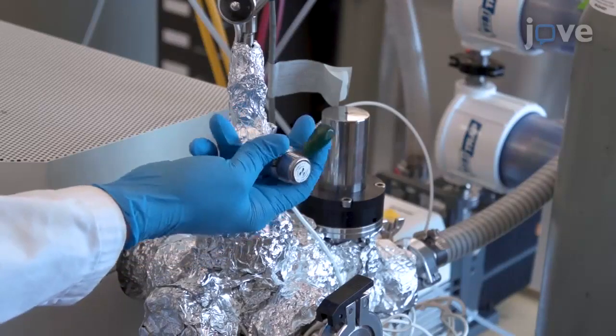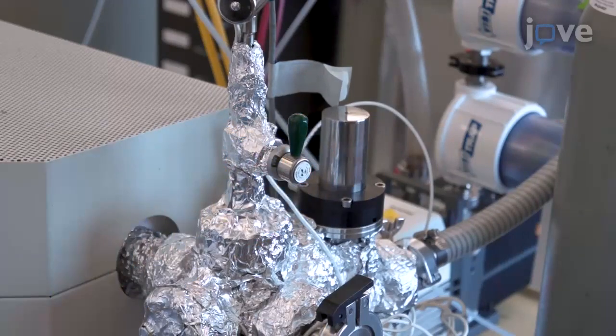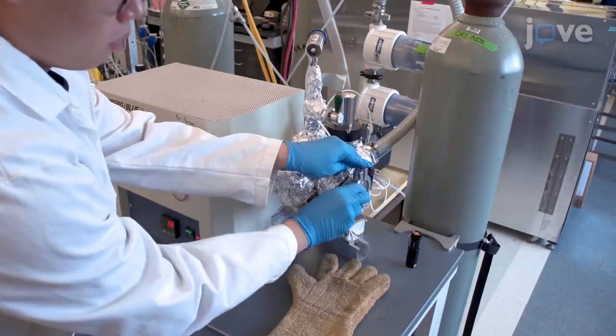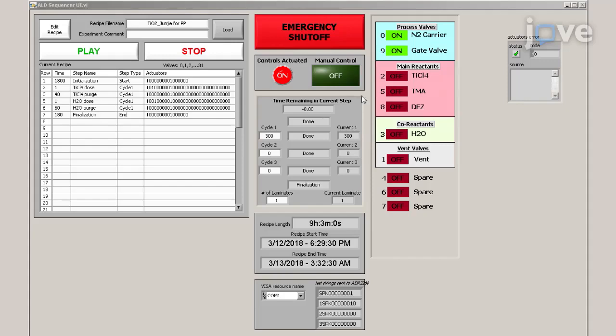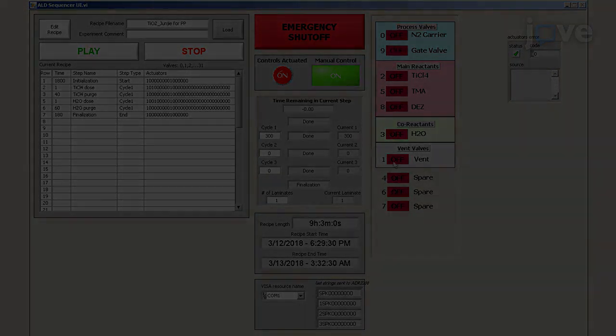Upon completion of the recipe, open the pressure gauge. Remove the clasp from the reactor cap. Turn on manual control in the system. Following this, close the carrier nitrogen and gate valve on the ALD reactor.